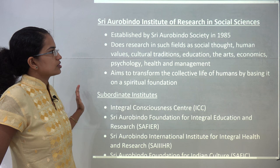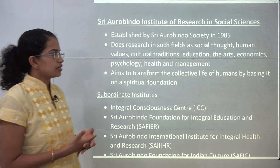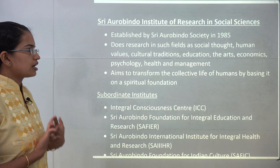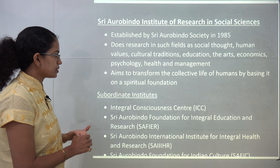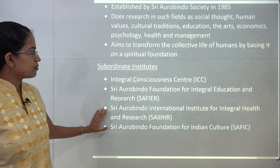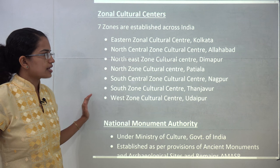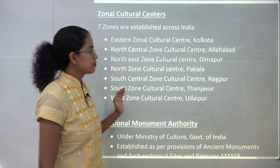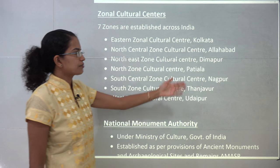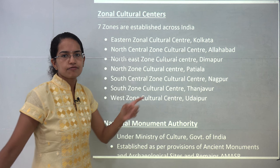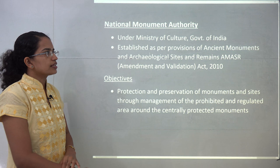The Sri Aurobindo Institute of Research in Social Sciences was established by the Sri Aurobindo Society in 1985. It works around social thought, education, arts, economics, psychology, health, and management, with various subordinate organizations. There are also seven zonal cultural centres established across India: the West Zone in Udaipur, South Zone in Thanjavur, and centres in Nagpur, Patiala, Dimapur, Allahabad, and Kolkata as the different cultural zone centres of India.